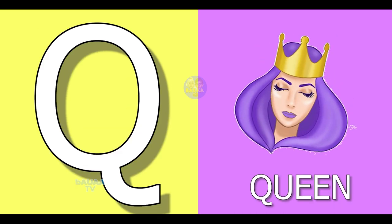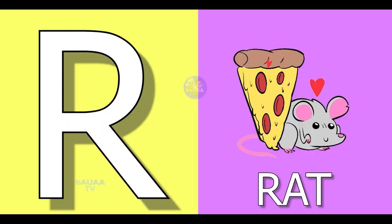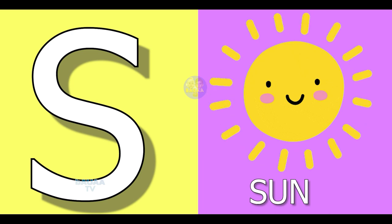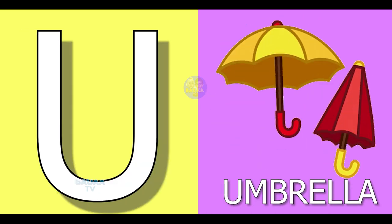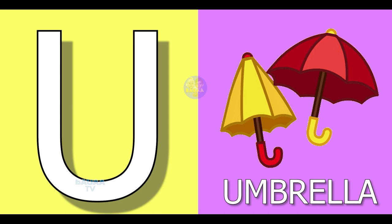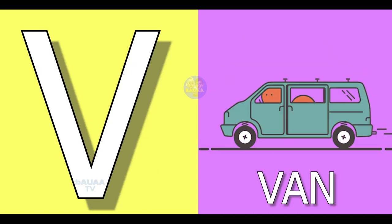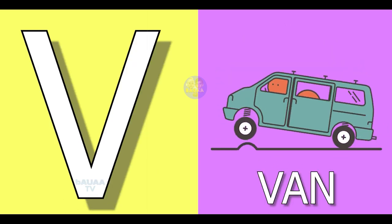Q for queen, R for red, S for sun, T for tiger, U for umbrella, V for wind.